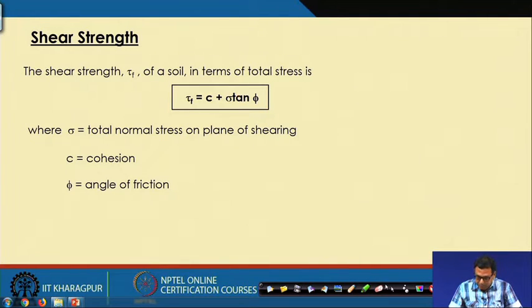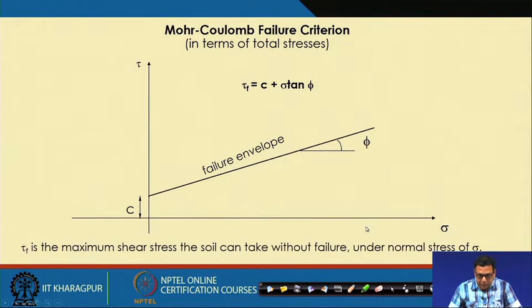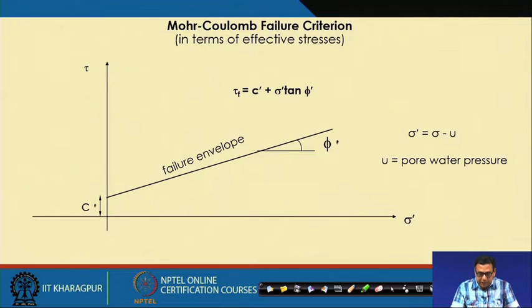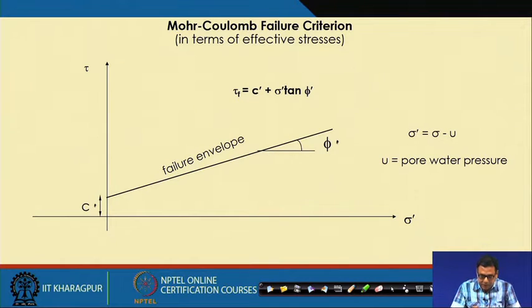In terms of effective stress, we can also write a similar expression: C prime plus sigma-dash times tan(phi-dash). Here sigma-dash, sometimes written as sigma-bar, is the total stress minus pore water pressure. So this shear strength is written in terms of effective stress.